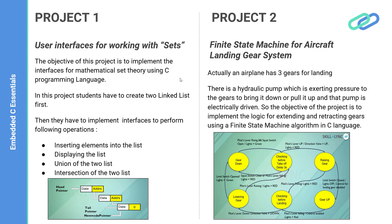The second project introduces finite state machine-based algorithms, which you may have seen in state flow or digital system design. You will learn how to convert a logic into a finite state machine, and if a finite state machine is given to you, how to convert that into C code. We have taken a case study of controlling the aircraft landing gear system with the help of a finite state machine algorithm.